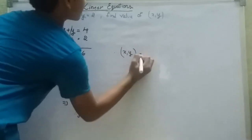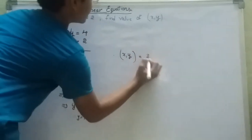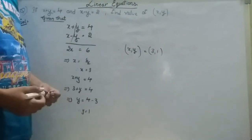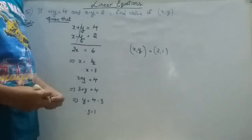(X, Y) is equal to (3, 1). Thank you for watching this video and please subscribe to see more videos. To subscribe, please click the bell icon.